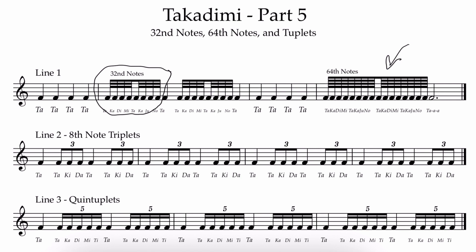You can keep going from here: 128th notes will have five beams, 256th notes will have six beams, 512th notes will have seven beams. Yes, they do exist. I kind of think it's like a billion dollars — probably not something most people have ever seen in their lives, but it does exist. This is where things get a little crazy.